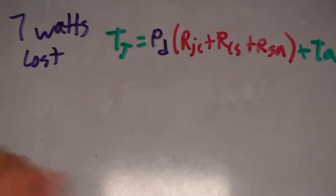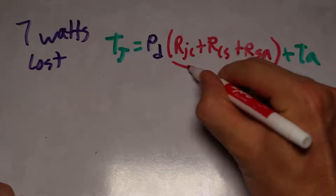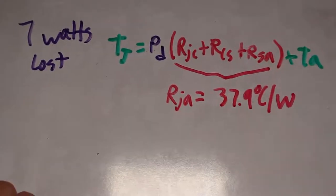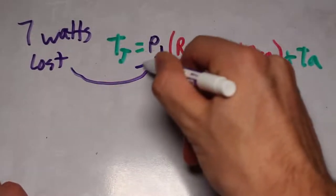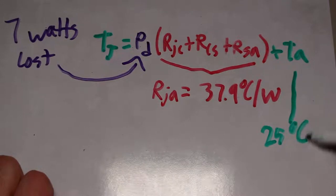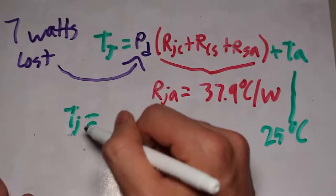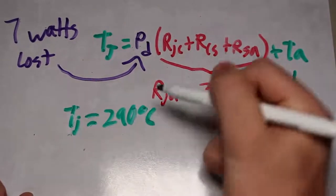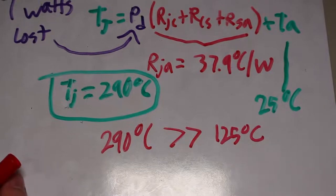For our bare LM317, we can replace all of these resistances with the 37.9 degrees Celsius per watt that we got from the datasheet, because the datasheet already made all these calculations for us. Now, plugging in all the values, with the ambient temperature being estimated at about 25 degrees Celsius, we calculate that it will get a junction temperature of about 290 degrees. So we clearly need a heatsink for this application, because 290 is a lot larger than 125 degrees.